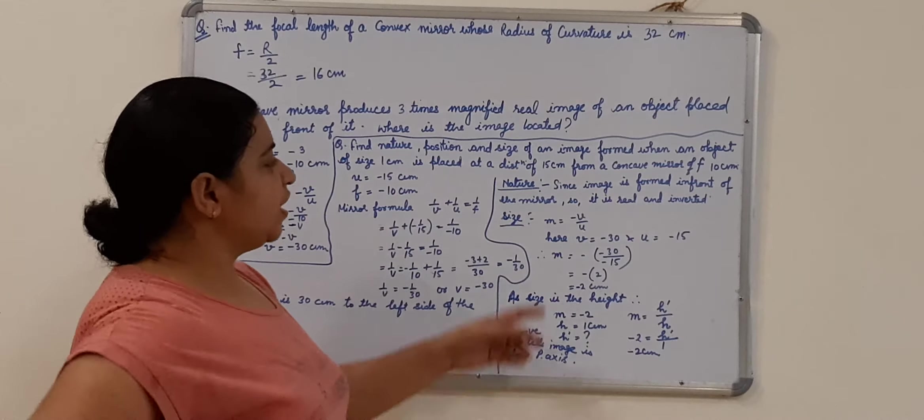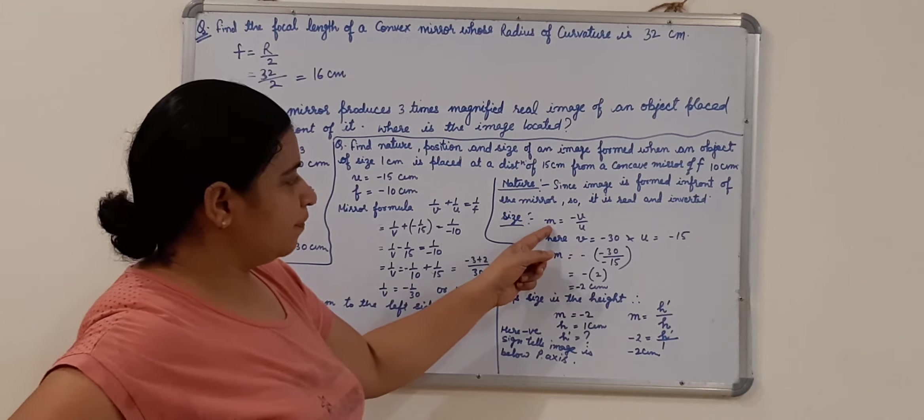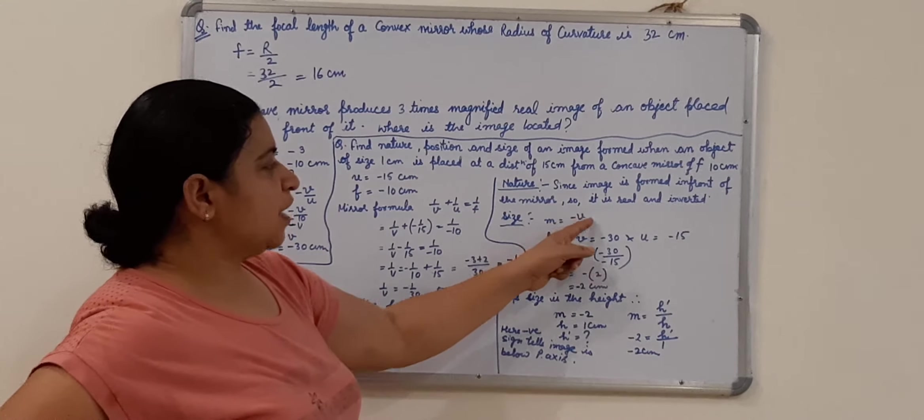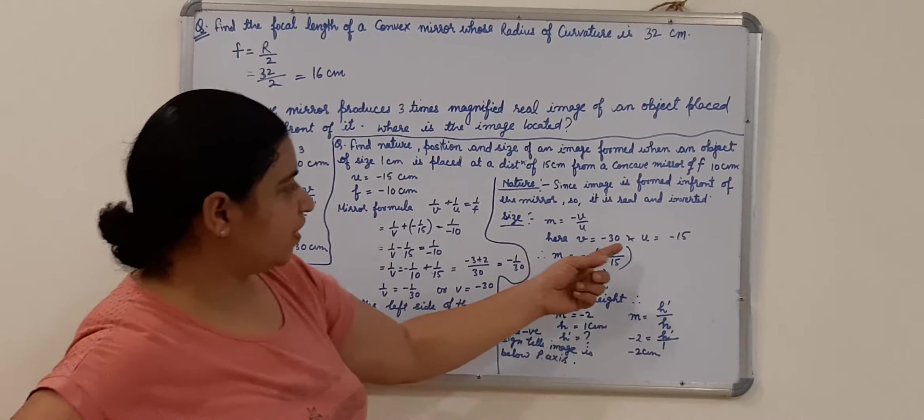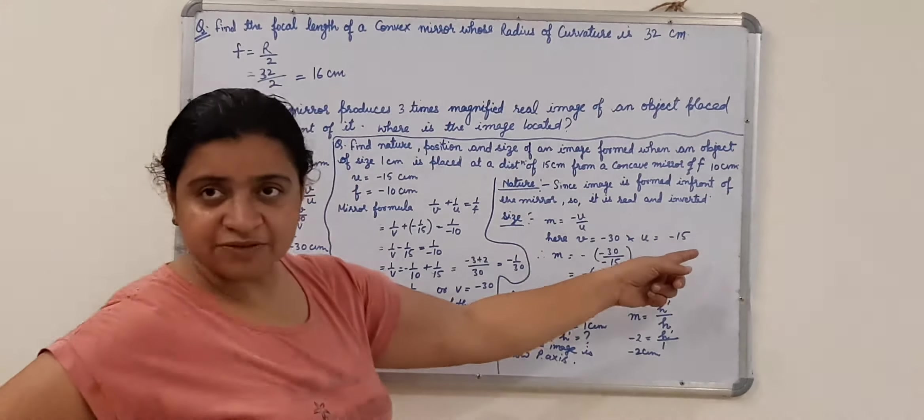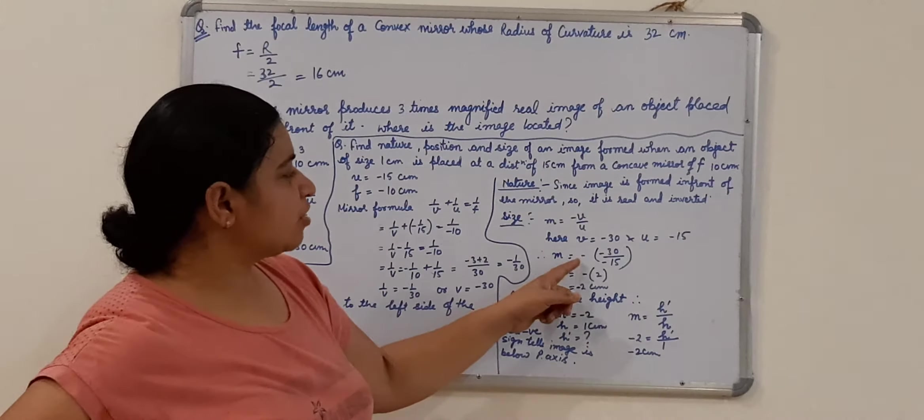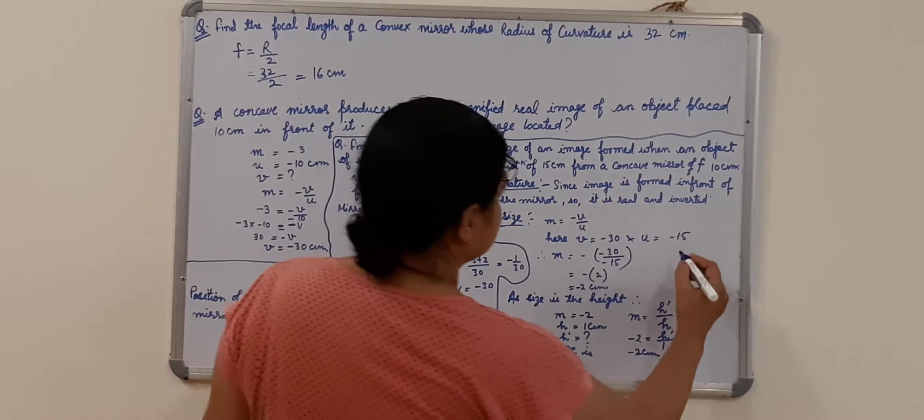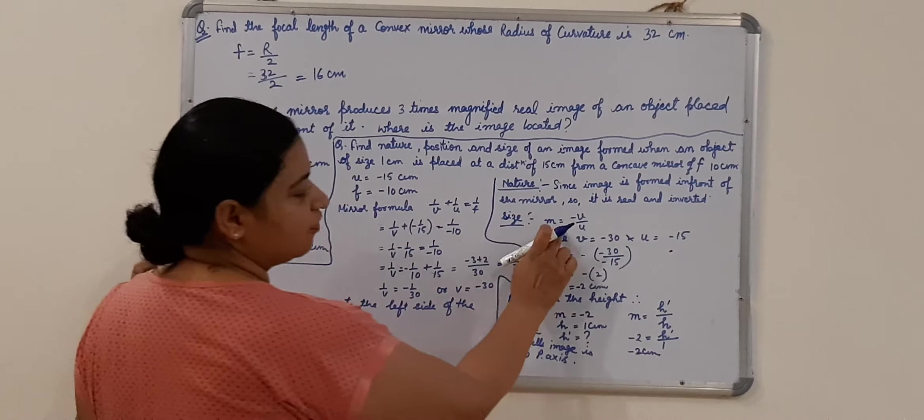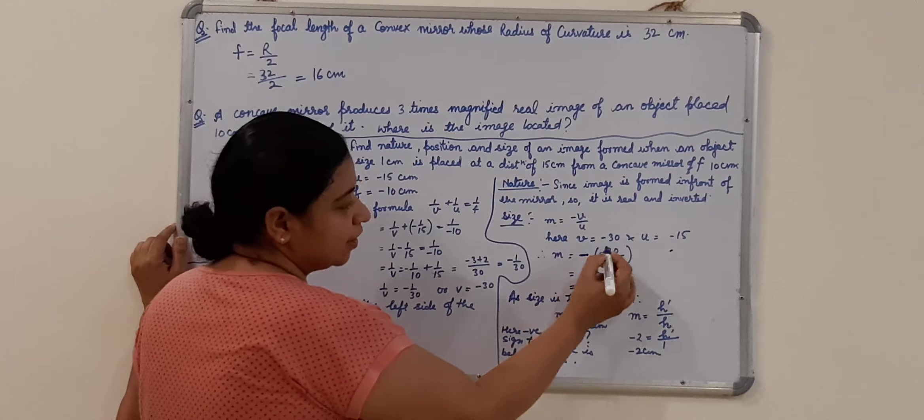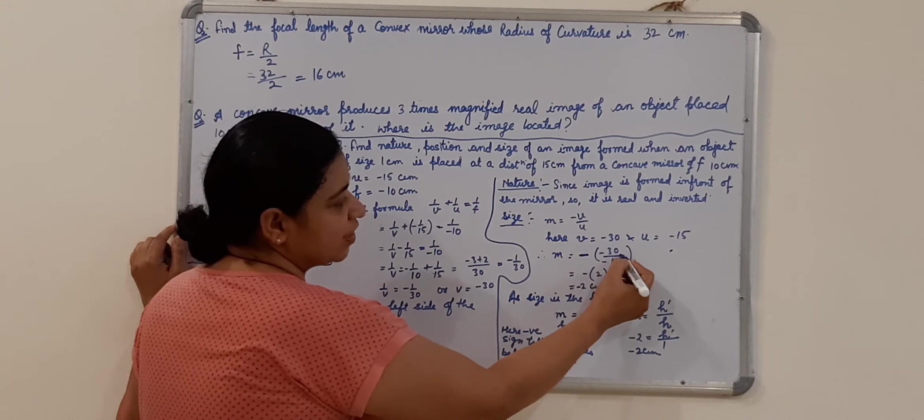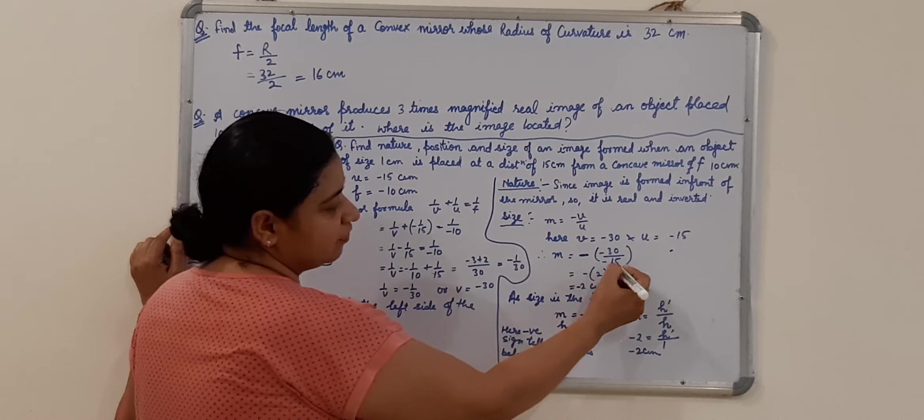Size. First, we need to find out M. M is equals to minus V upon U. V is equals to minus 30. We had calculated just now and we know the value. And U is equals to minus 15. Put the value, M is equals to, we know that magnification. M, this is the formula for magnification. M is equals to minus V upon U. So, put the values, keeping minus outside the bracket.